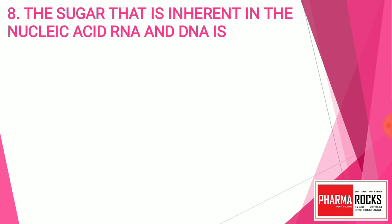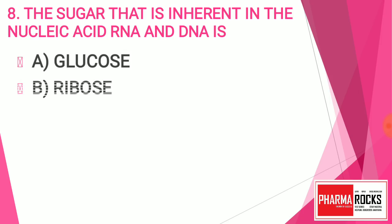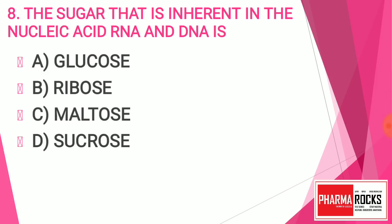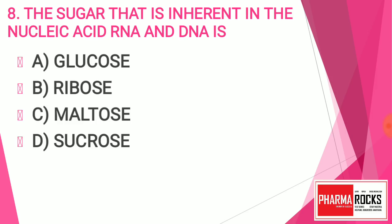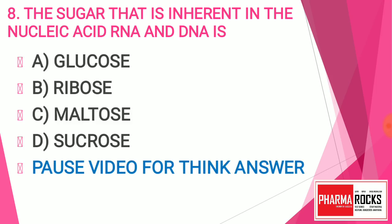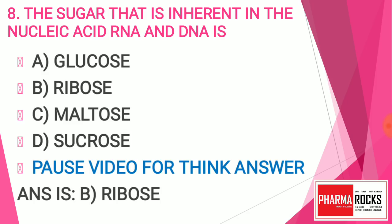Question number eight: The sugar that is inherent in the nucleic acids RNA and DNA is — Option A: Glucose, Option B: Ribose, Option C: Maltose, Option D: Sucrose. You have to find out the sugar inherent in nucleic acids RNA and DNA. The answer is B — Ribose. Ribose is the sugar that is inherent in both RNA and DNA.